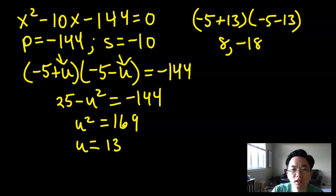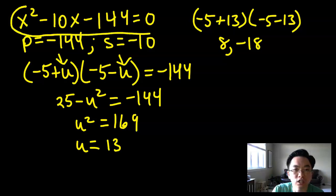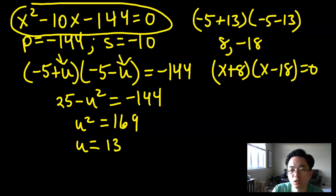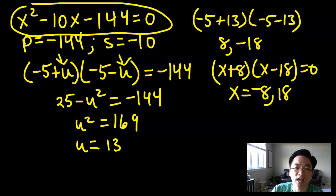So the original equation factors like so: x plus 8 times x minus 18 equals zero. And if you had to solve this, x equals negative 8 or 18.